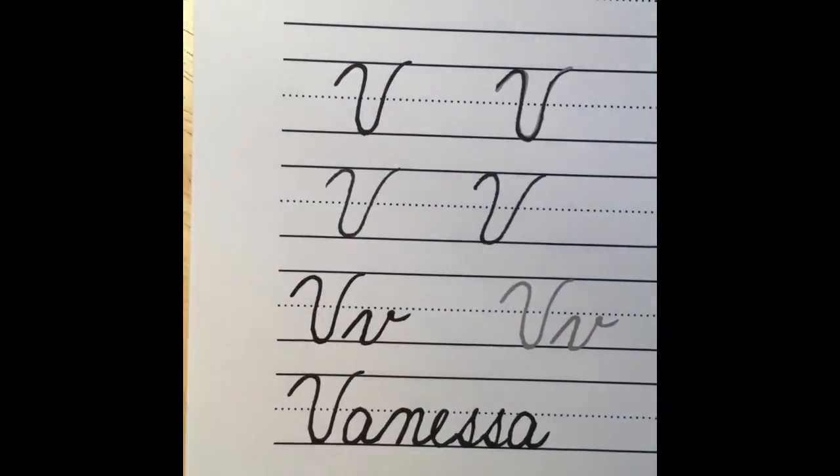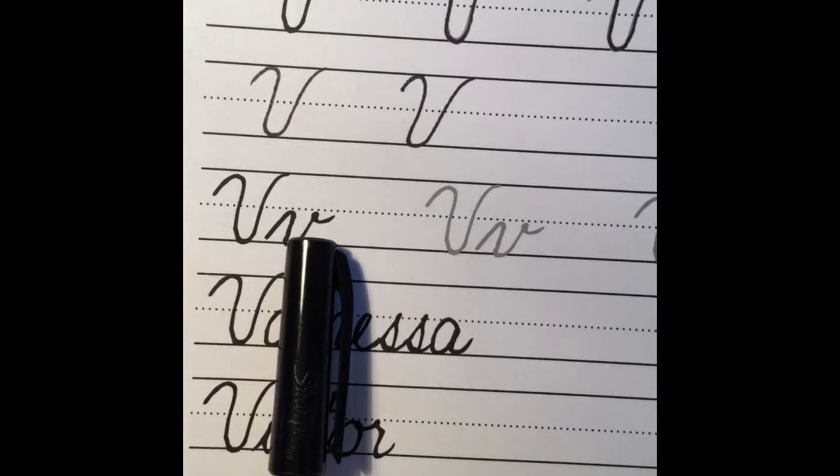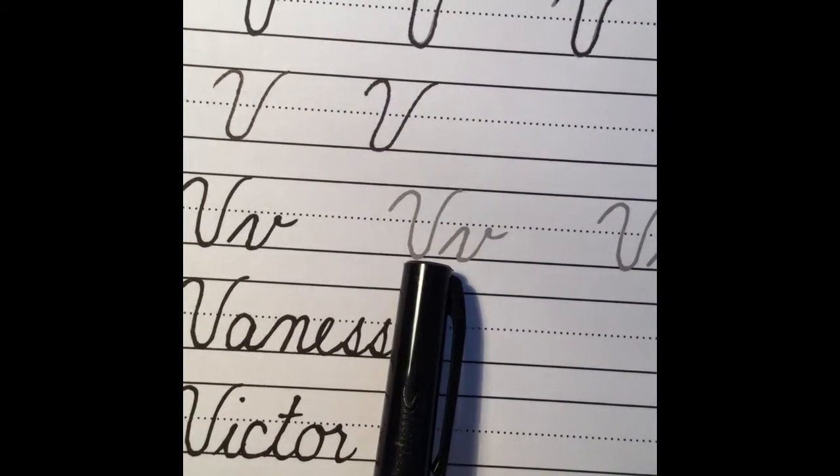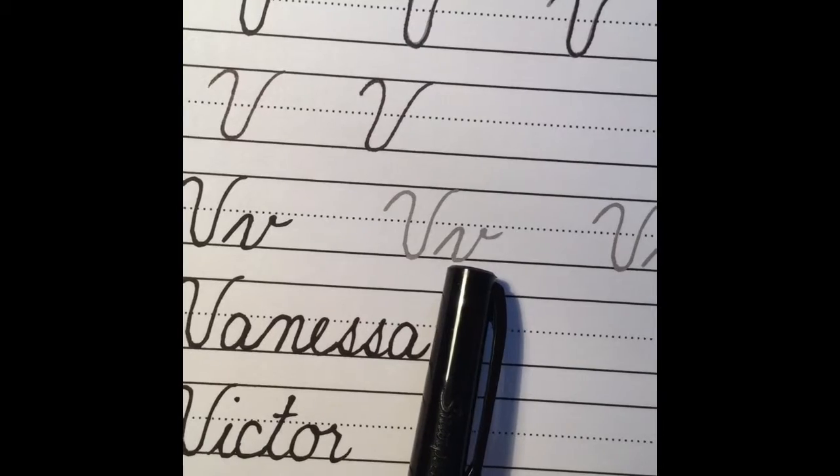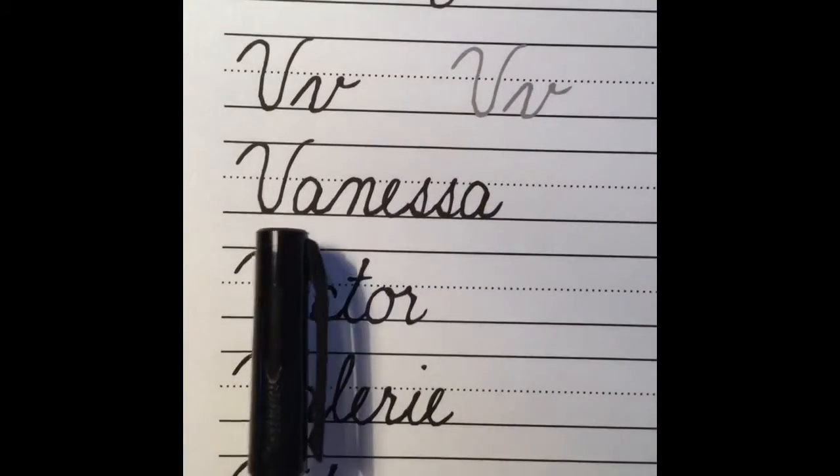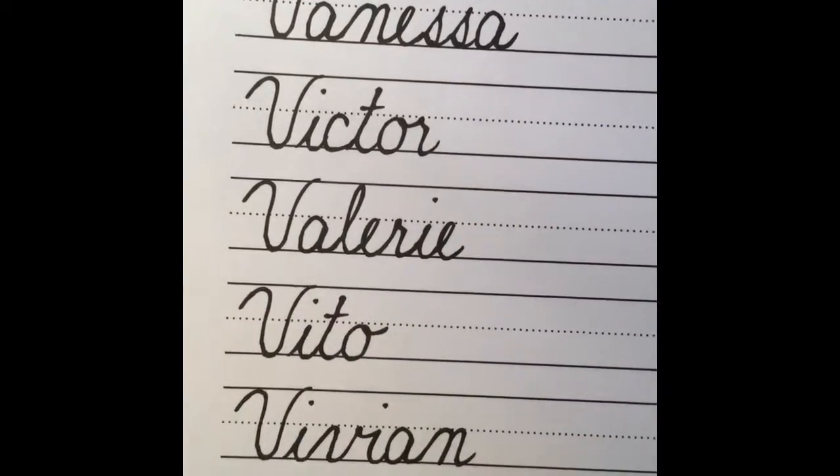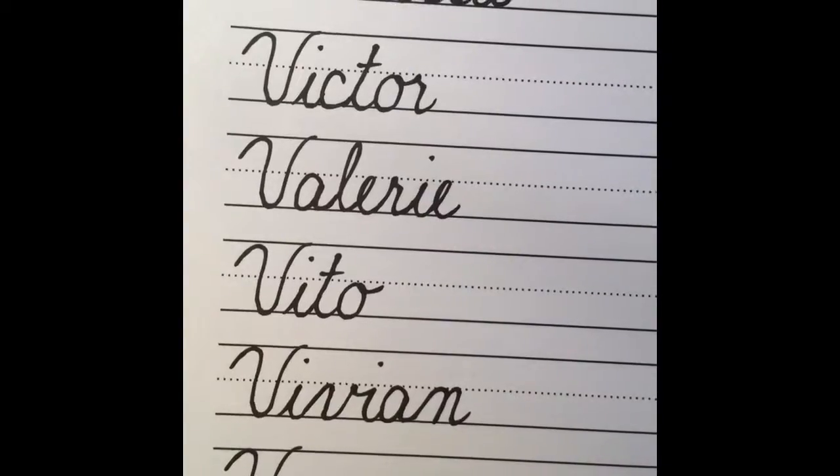A capital V does not connect, and so we just have its partner lowercase v here. It's one of the letters that does not connect, and so it will not connect to any of the words of Vanessa or Victor, Valerie, Vito, Vivian, or Vance.